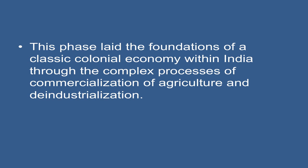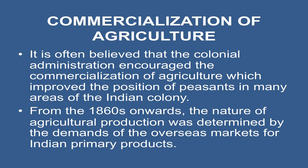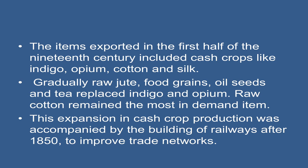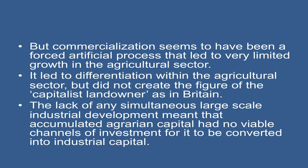This phase laid the foundations of a classic colonial economy within India through the complex processes of commercialization of agriculture and deindustrialization. The colonial administration encouraged the commercialization of agriculture. From the 1860s onwards, the nature of agricultural production was determined by the demands of the overseas market for Indian primary products. Items exported in the first half of the 19th century included cash crops like indigo, opium, cotton, and silk; gradually, raw jute, food grains, oil seeds, and tea replaced indigo and opium, while raw cotton remained the most in-demand item. The expansion in cash crop production was accompanied by the building of railways after 1850 to improve trade networks.